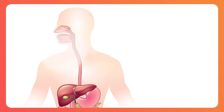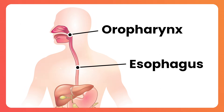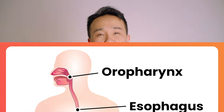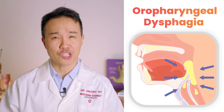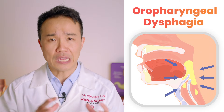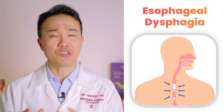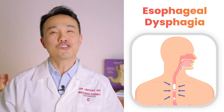Broadly, we can divide swallowing disorders into two main groups based upon the location of the problem. The location could either be in the oropharynx — the middle part of the pharynx or throat region — or the esophagus, which is the long muscular tube that goes from the bottom of the pharynx to the stomach. We can have oropharyngeal dysphagia, where symptoms arise from the dysfunctional transfer of a food bolus in the pharynx to the esophagus, or esophageal dysphagia, where the problem is localized to the esophagus.